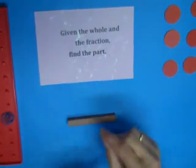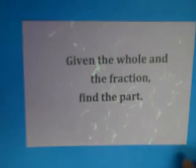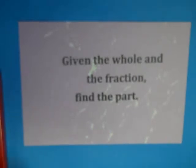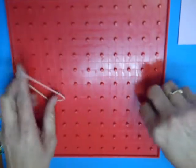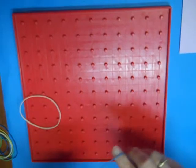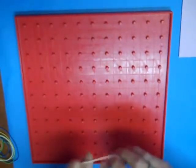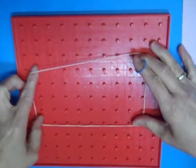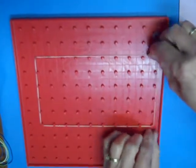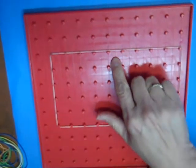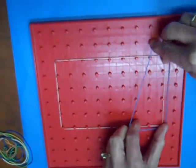If we were given the whole and the fraction, I want to find the part. If my rectangle is the whole, I want to find a fourth. So I could say 1, 2, 3, 4, 5, 6, 7, 8. I just want to have an 8 here. So what would a fourth look like?